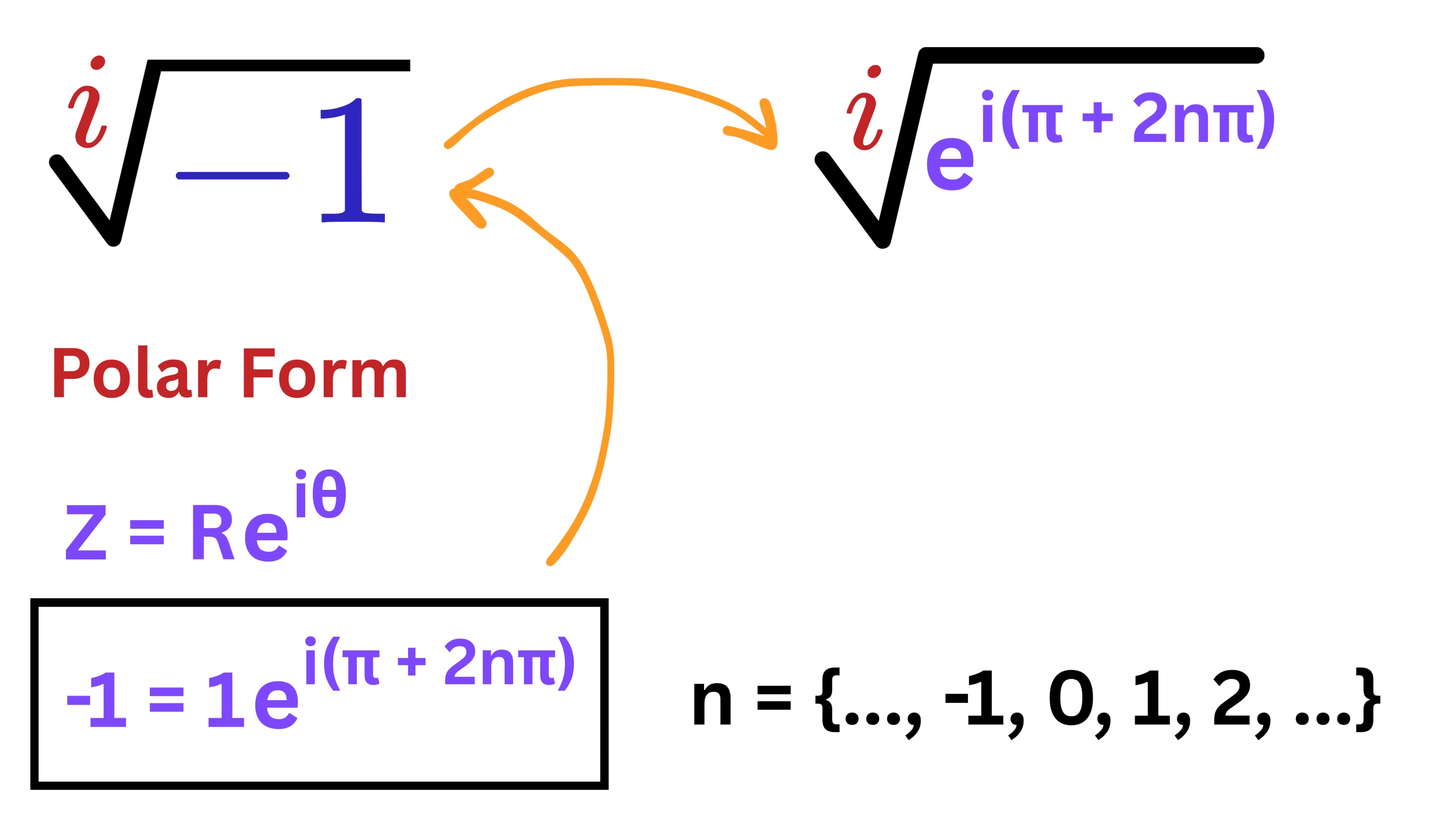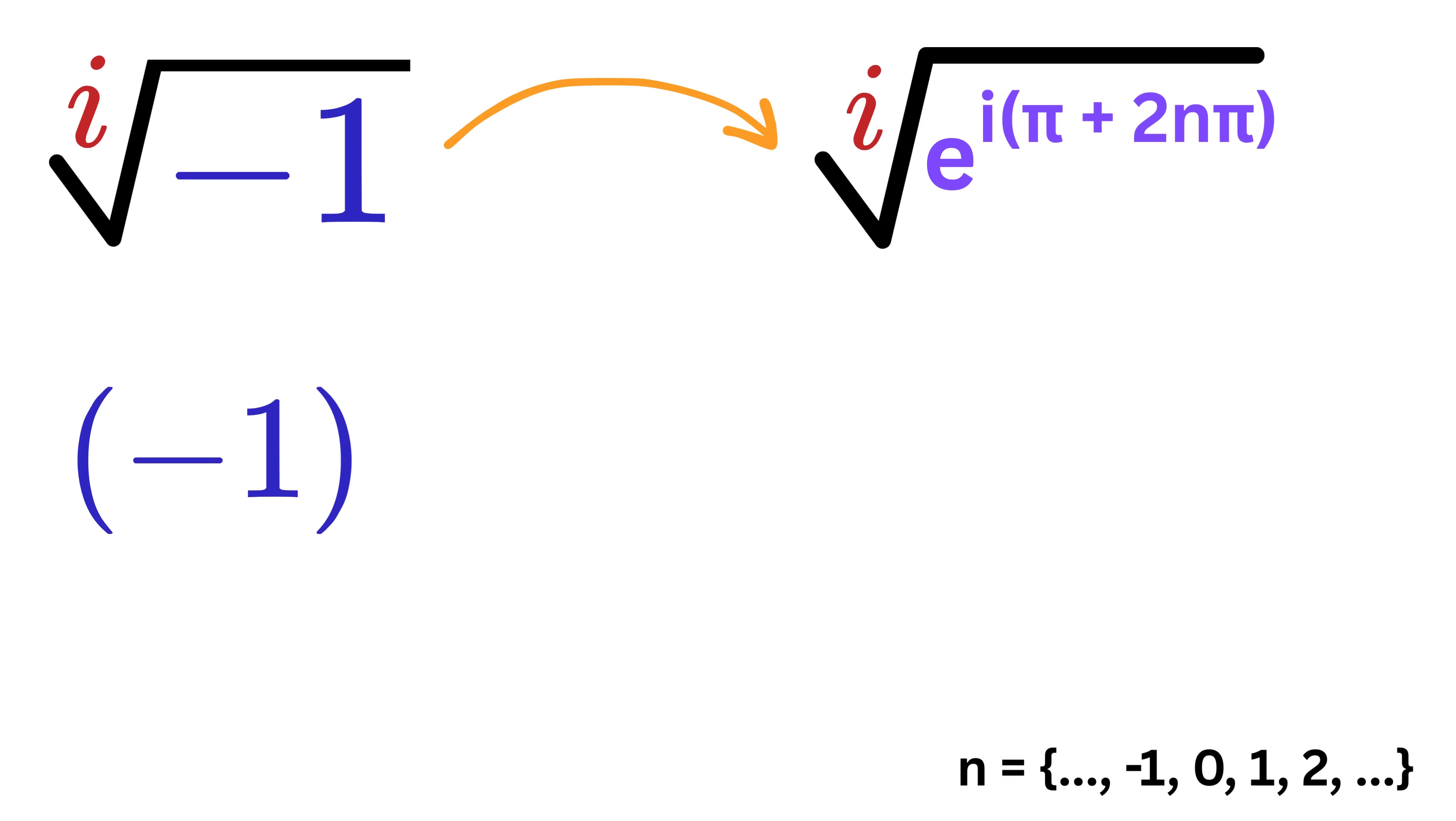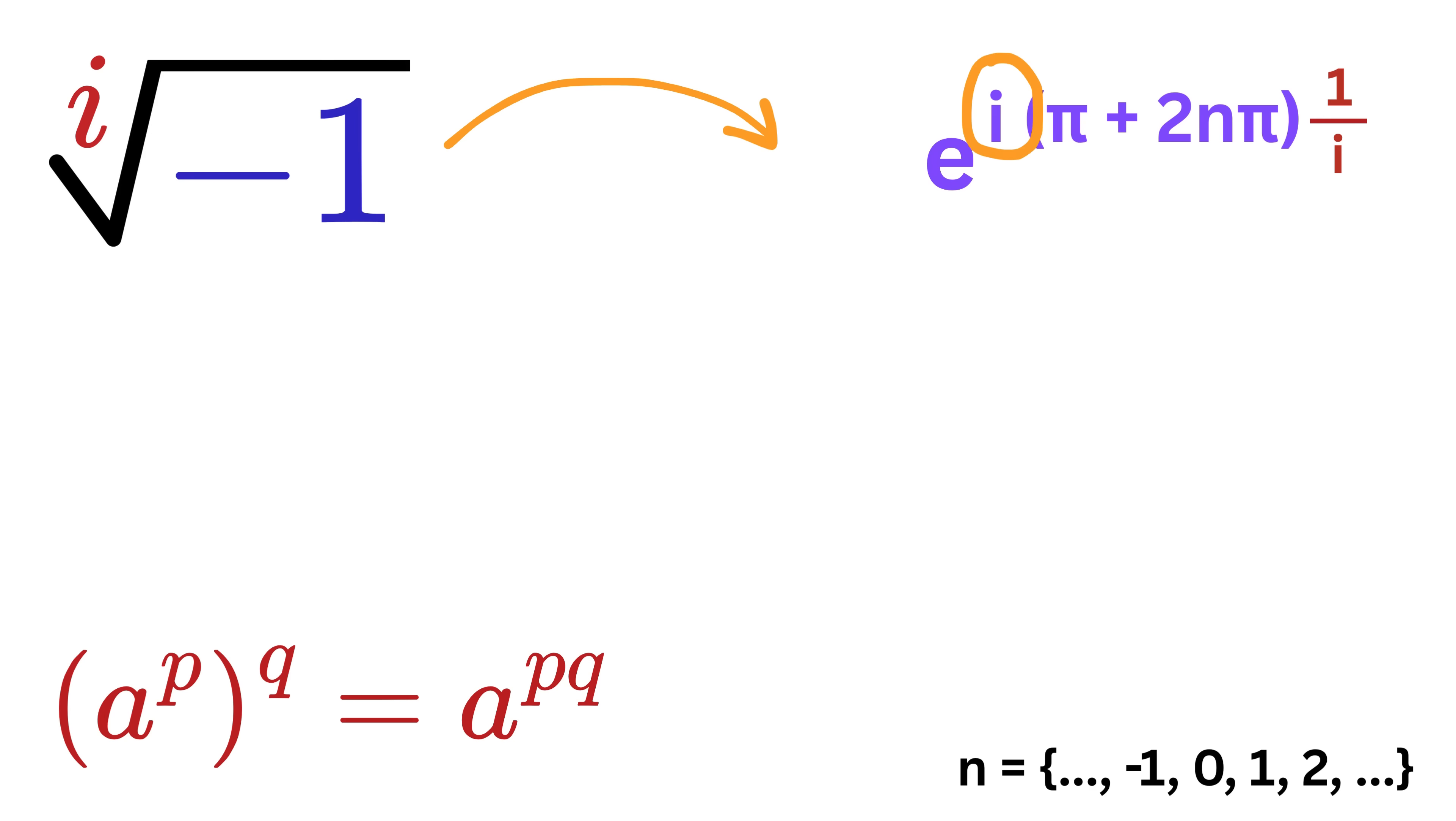Now, let us find the i-th root of this. The i-th root means we are raising this expression to the power of one over i. So, we have e raised to i times the quantity pi plus two n pi, all raised to one over i. Now, there is a power rule where a raised to p, whole raised to q equals a raised to p times q, which means when we raise an exponent to another exponent, we multiply them. Therefore, i multiplied by one over i becomes one as they cancel each other out, and that leaves us with e raised to pi plus two n pi. That is the simplified form of our answer.